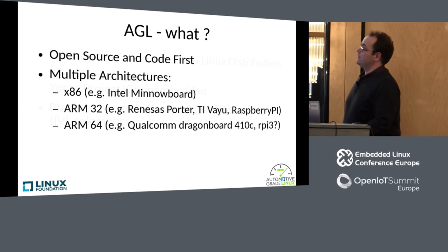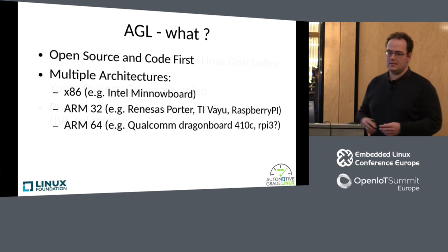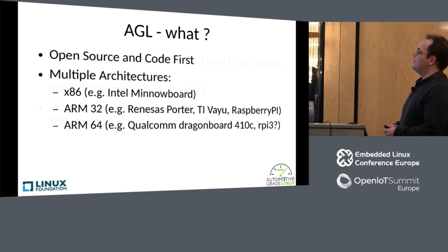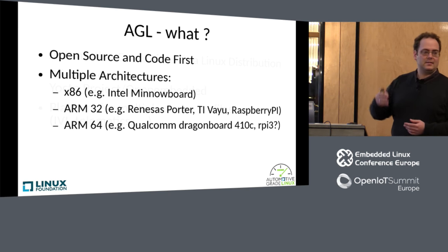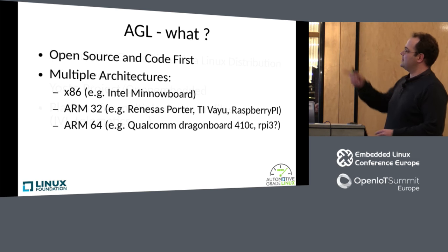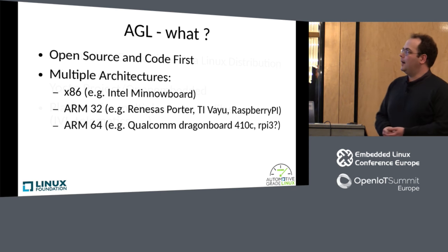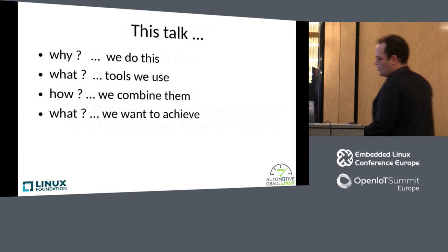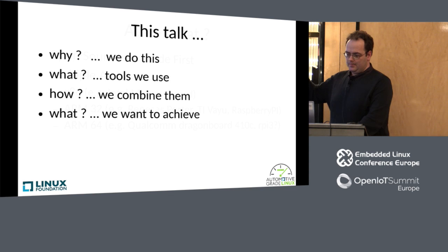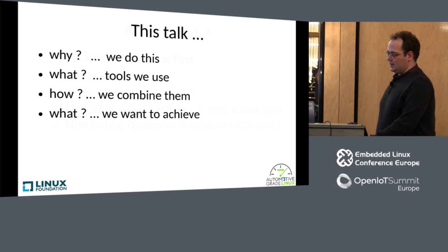Our goal is open source and code first, and we support multiple architectures. For x86, the MinnowBoard is a reference platform; for ARM32, the Renesas Porter; and for ARM64, DragonBoard is a nice candidate. I've also seen Matt Porter post on G+ about Raspberry Pi 3 with 64 bits, so that might be an interesting target here.